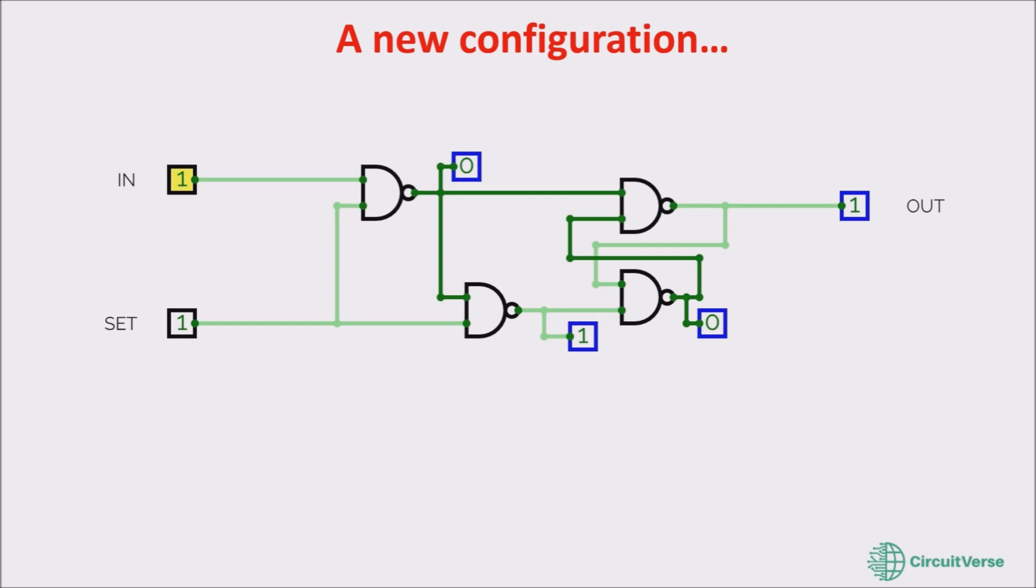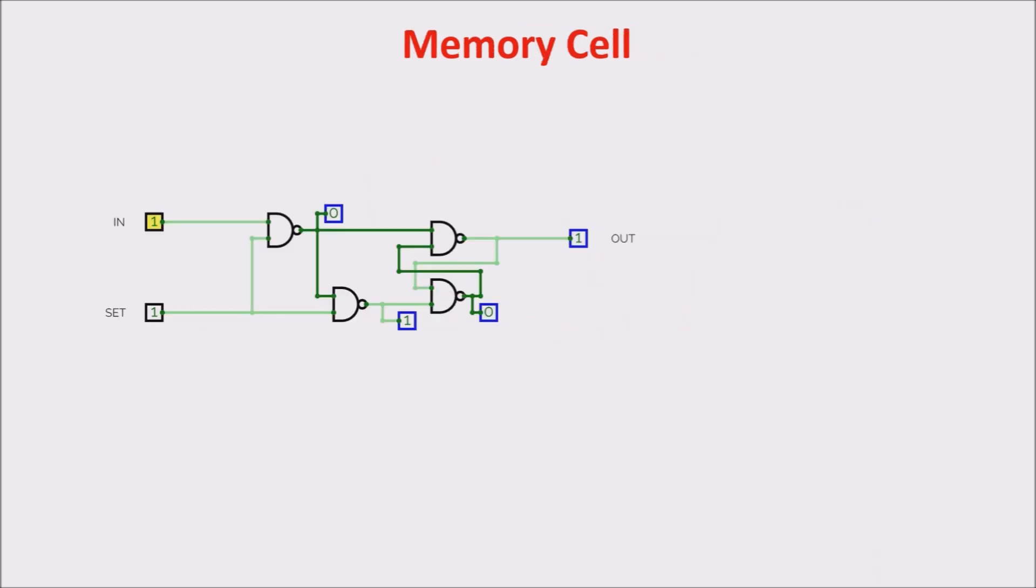This is a memory cell much easier to handle, where you can store the input value by controlling SET input. This memory cell is called DLATCH or DATALATCH. It is much easier to handle in respect to SRLATCH. Here you can store the input data by controlling SET input.